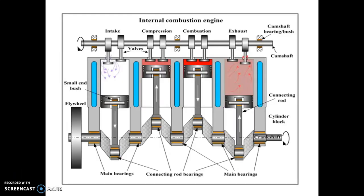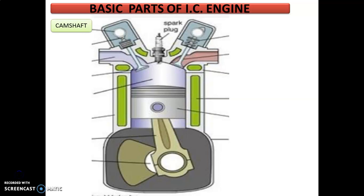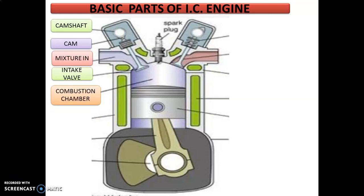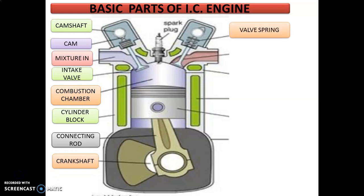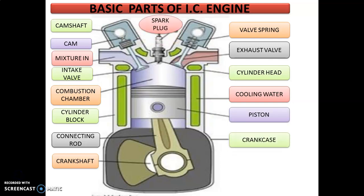The IC engine parts. This figure shows the various components of IC engine. The basic parts are camshaft, cam, intake port, intake valve, combustion chamber, cylinder, spark plug, connecting rod, crankshaft, valve spring, exhaust valve, cylinder head, cooling water — which is circulated around the cooling water jacket to dissipate the heat produced during combustion — piston, crankcase, and spark plug. Now we will study these basic parts of internal combustion engine in detail.